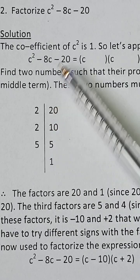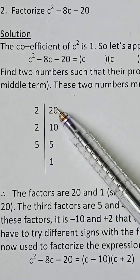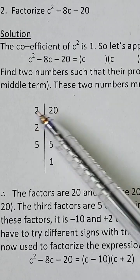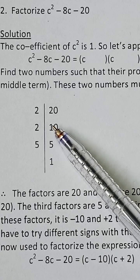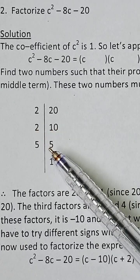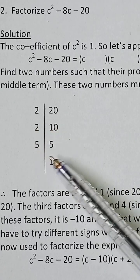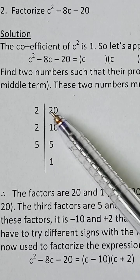20 can divide by 2 as the smallest number. 20 ÷ 2 = 10, then 10 ÷ 2 = 5, and 5 ÷ 5 = 1. So the factors of 20 are...